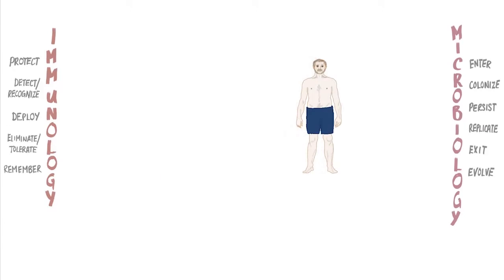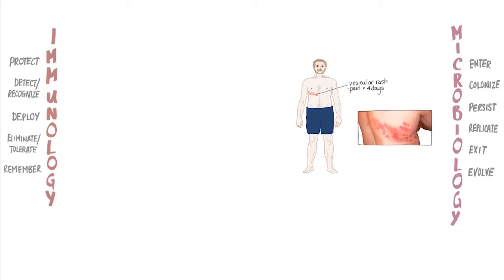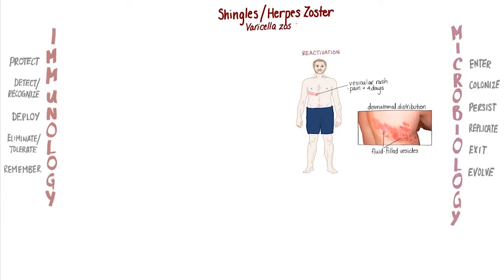Noah went in to see his doctor one morning after waking up with a painful vesicular rash on the right side of his torso. He had been experiencing pain in that exact region for four days before the rash appeared, and he told his doctor that the area felt so tender that even when the cloth of his shirt rubbed against it, the pain was excruciating. After just one look at the dermatomal distribution of the tiny fluid-filled blisters on Noah's upper body, the physician immediately recognized the characteristic presentation of shingles, also called herpes zoster, a skin manifestation caused by the reactivation of the varicella zoster virus.